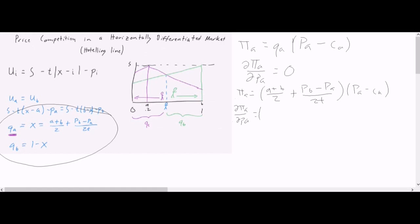The derivative of what's in the parentheses first is minus 1 over 2T times whatever's in the second parentheses, PA minus CA, plus all the stuff in the first parentheses, A plus B over 2 plus PB minus PA over 2T, times the derivative of what's in the second parentheses. So we're going to set all that stuff equal to 0. And when we do that, we're going to solve for PA, which enters this equation twice. The best response function for firm A is defined as the price of A is equal to 1 half times T times A plus B plus CA plus PB. And that is just the solution to the equation directly above it.